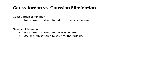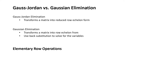We have discussed reduced row echelon form and row echelon form in a previous video in great depth. A combination of three elementary row operations can be used to transform the matrix.